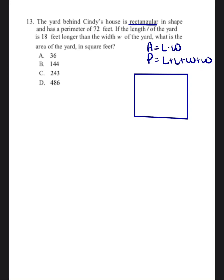Okay, so together we're going to be able to solve question number 13. It's asking us to find the area of a yard that's a rectangle, and they're telling us that the perimeter is equal to one thing, so figure out what the area is.